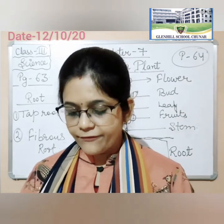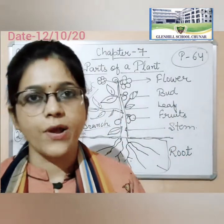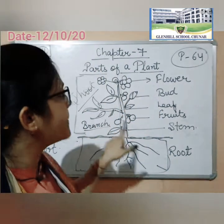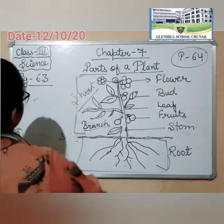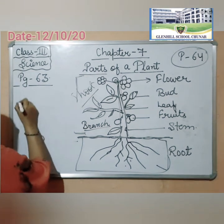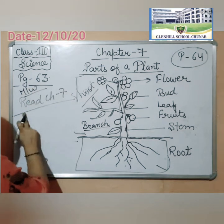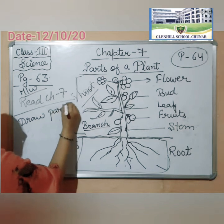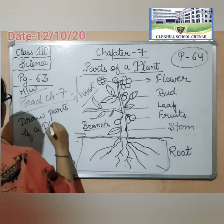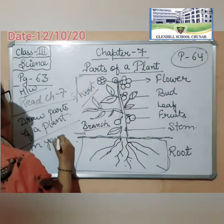Now about the leaf, flower and other parts of the shoot, I will discuss tomorrow. Because you have to read the chapter on your own. And also today's homework is: to complete the parts of the plant in your notebook — draw the parts of the plant in your notebook. Read chapter 7. Homework: read chapter 7 and draw parts of a plant in your notebook.